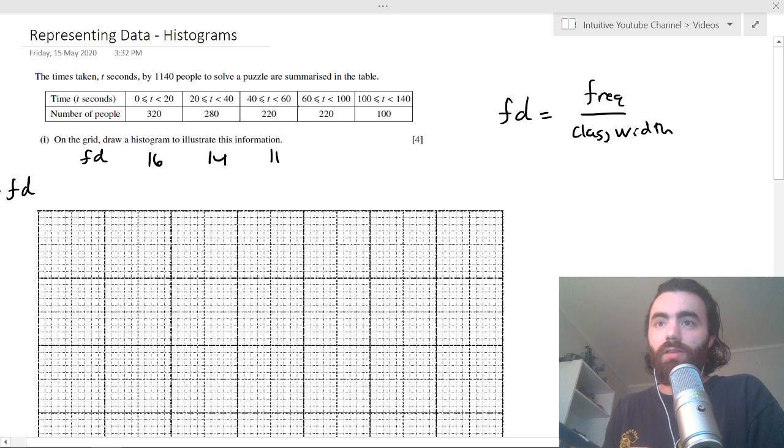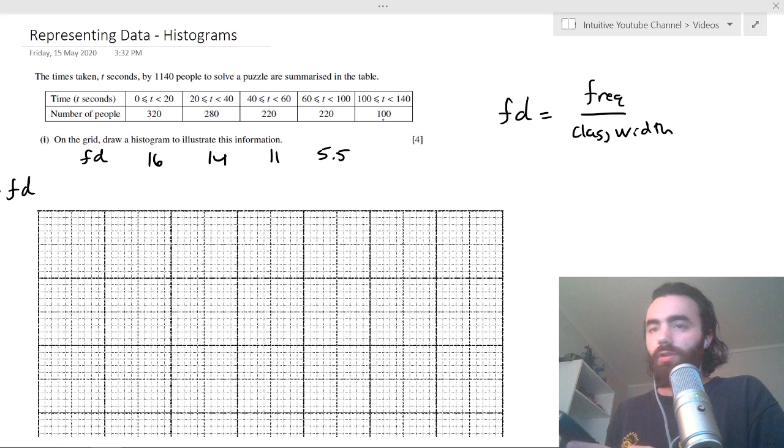And this one we can see now that the class width has actually doubled in size. So the class width is 40, 60 to 100, so 220 divided by 40 is 5.5. And 100 to 140, well, this is going to be 100 divided by 40. So you've got all your frequency density values there.